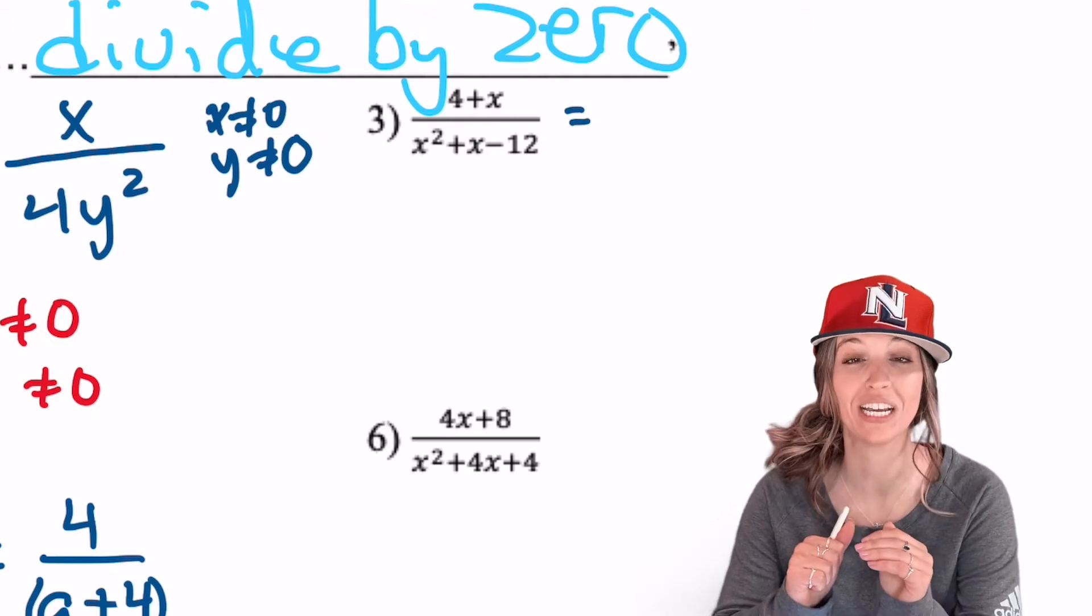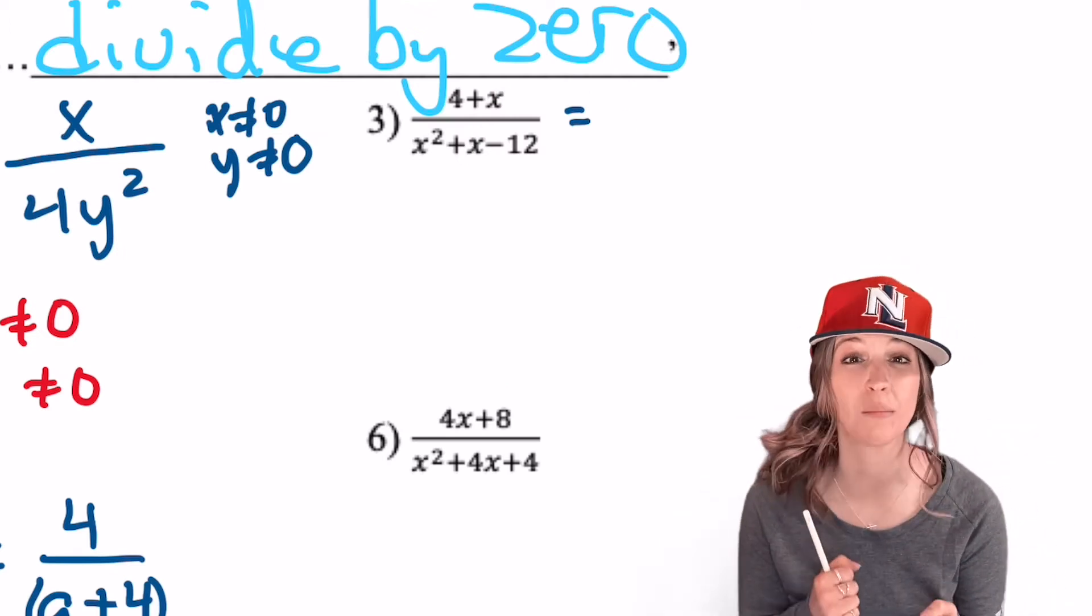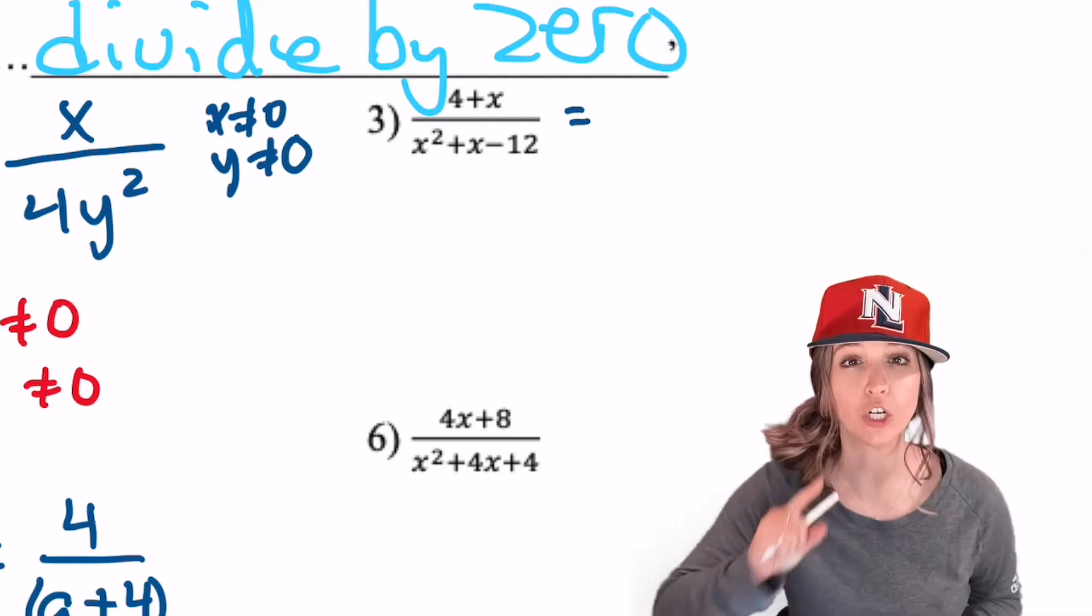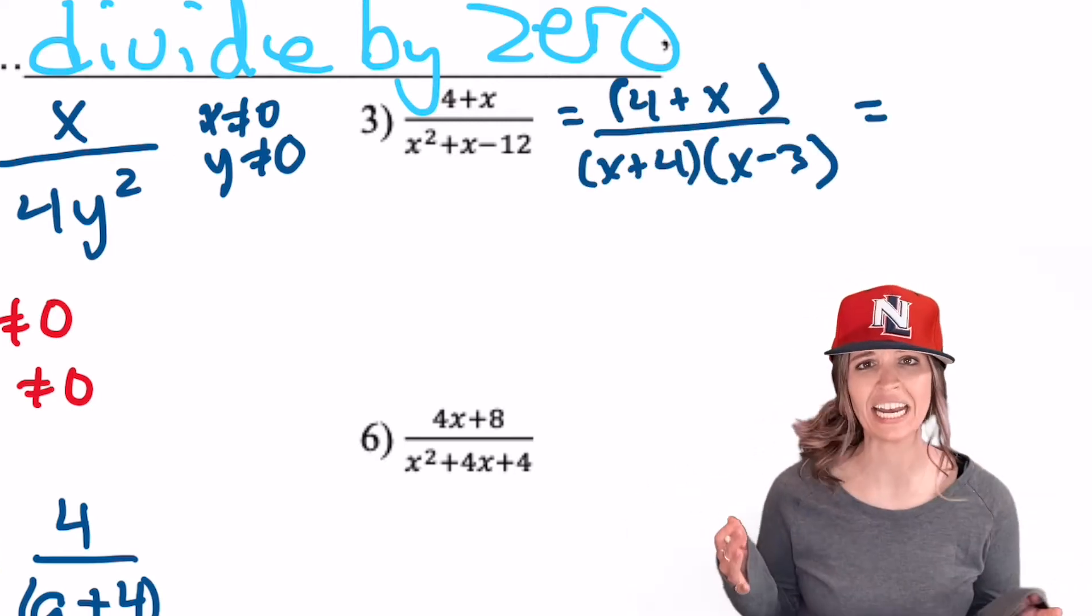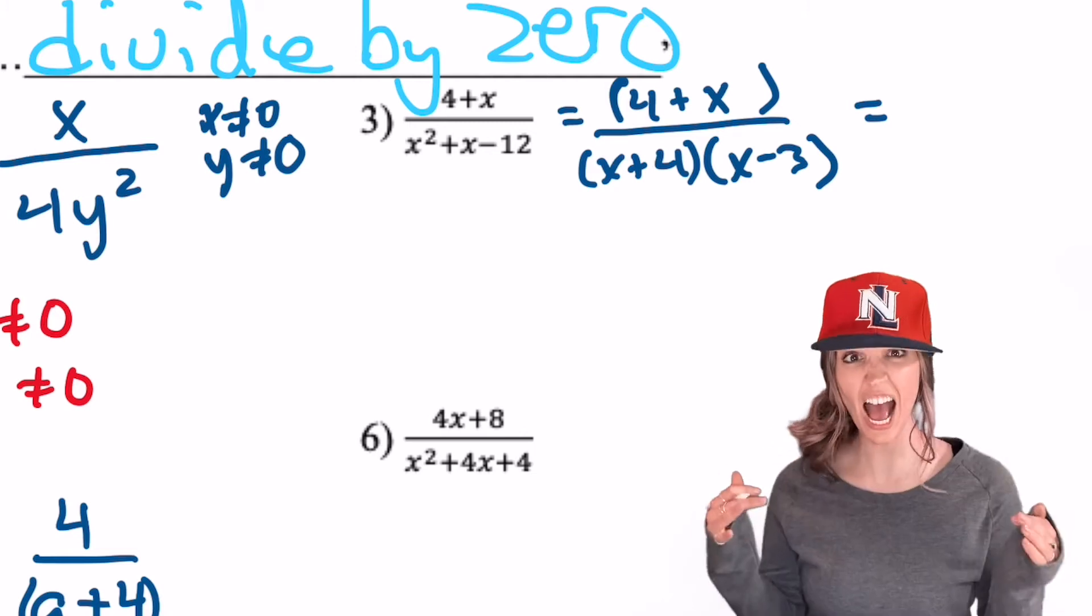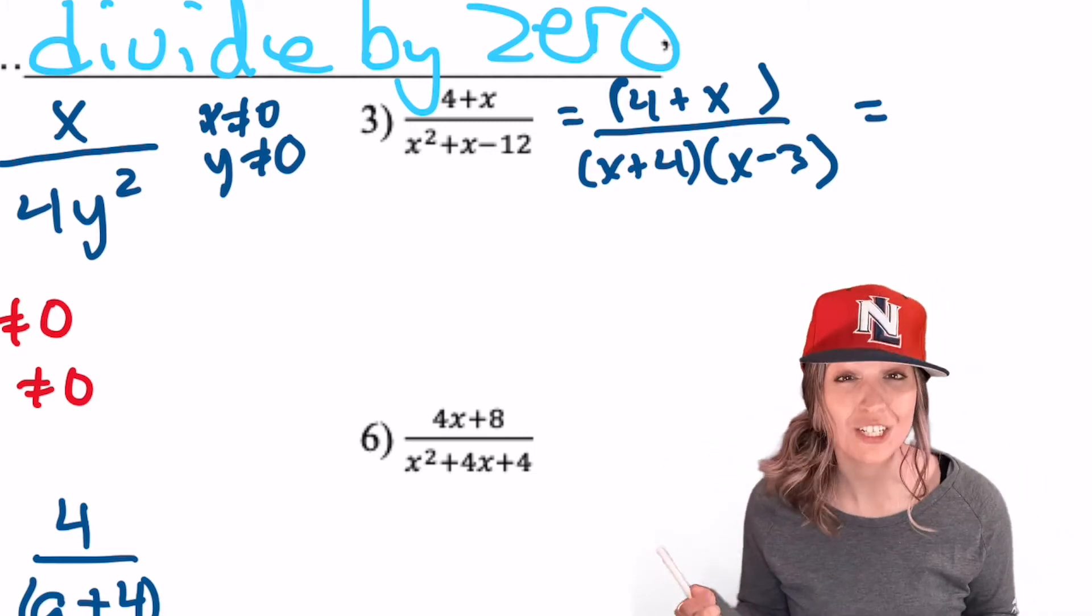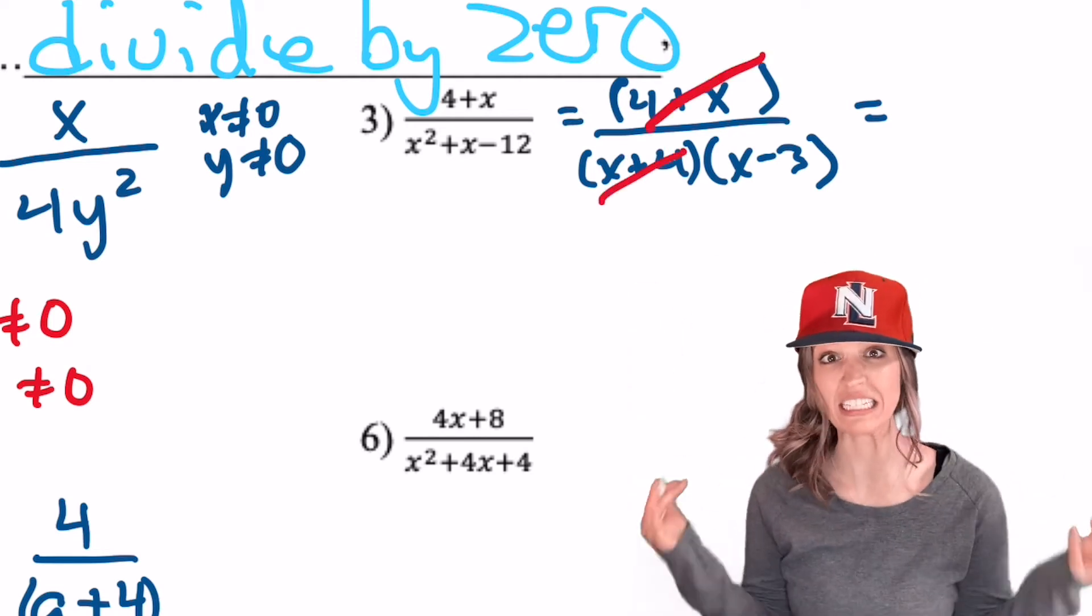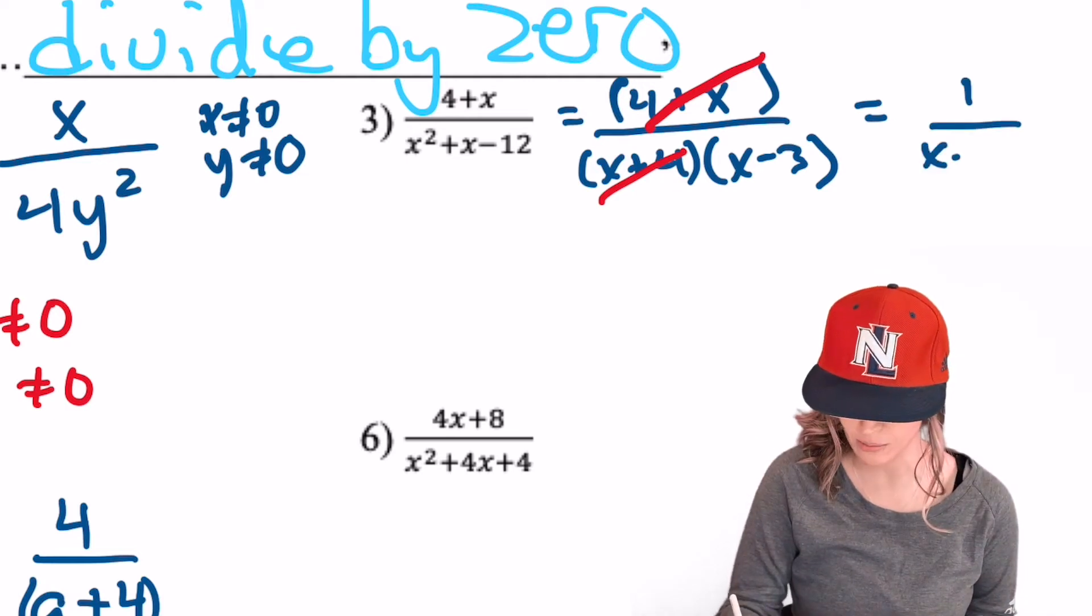Looking over example 3 here. Can I divide out those x's? No! Because we can't divide out part of a sum or a difference. We gotta hug it out! So first things first. Let's factor out that denominator and see if we can divide anything out. Well look at it now. Is there anything I can divide out? Yeah! I have 4 plus x divided by x plus 4. Commutative property of addition means those are equivalent. They're out of here! I just divided out my entire numerator. Or did I? I still have a 1 up there. Divided by x minus 3.